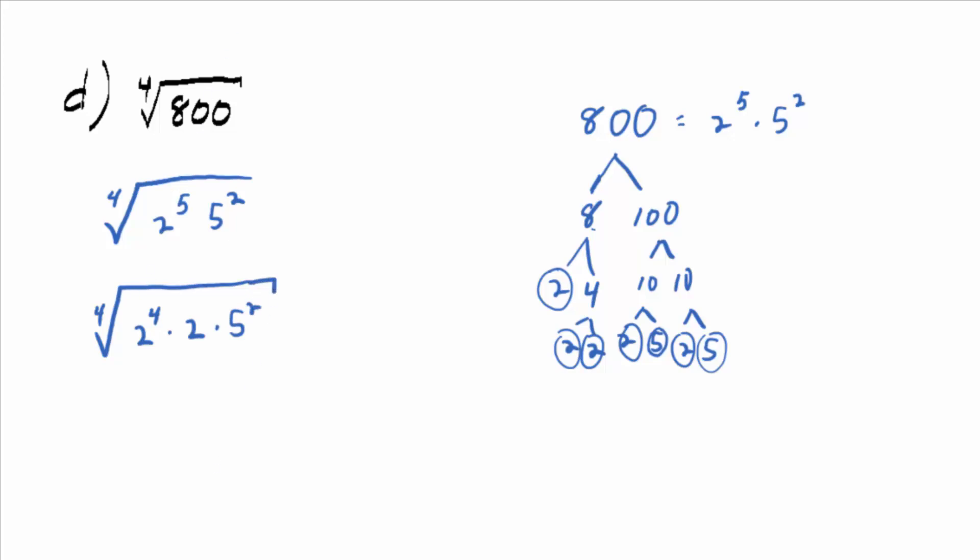Okay, do you want to skip the step where we break up the radical? Yeah, so just kind of circle your perfect 4th power. What's the 4th root of 2 to the 4th? So you can pull out a 2 on the outside. Okay, really what's happening is you can break up the radical over multiplication, and you have the 4th root of 2 to the 4th, which is 2, times the 4th root of 2 times 5 squared. But we skip that step. And then you clean it up. What's your final answer? You have a 2 on the outside, a big old 4th root of 2 times 25? Does everybody believe that?